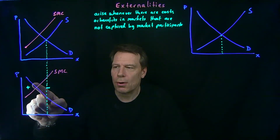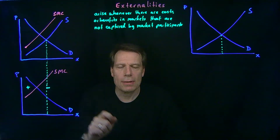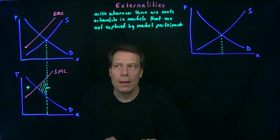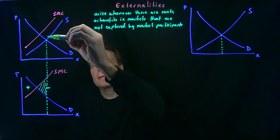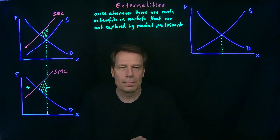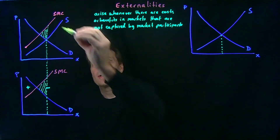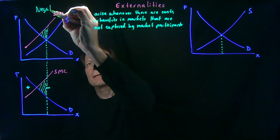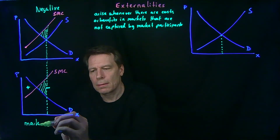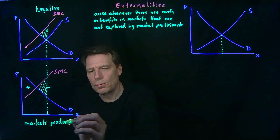The market captures all that positive social gain by producing these quantities, but it also dips into that negative area, which creates a deadweight loss. We can see that deadweight loss triangle up here. In other words, when we have this kind of externality — which we call a negative externality — markets produce too much.